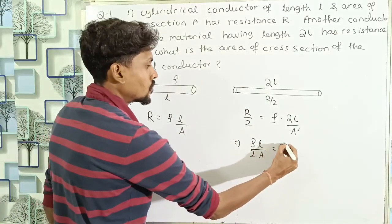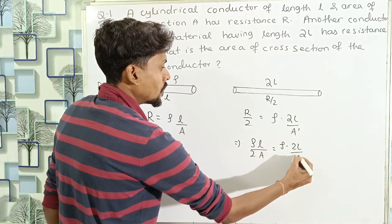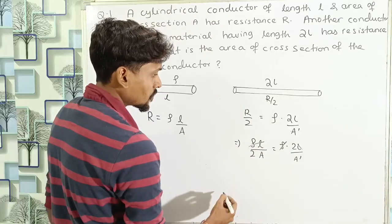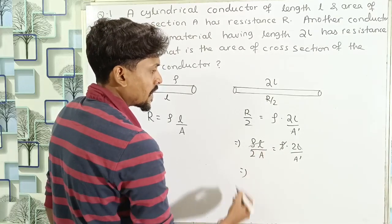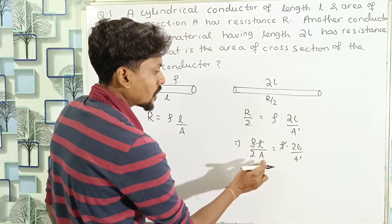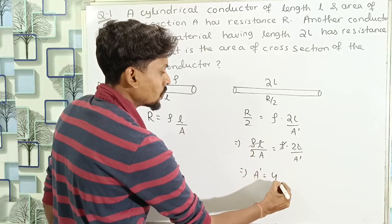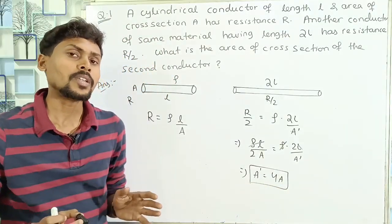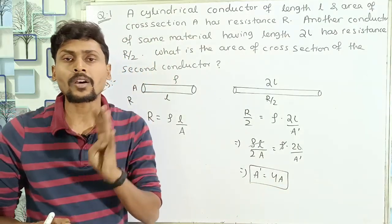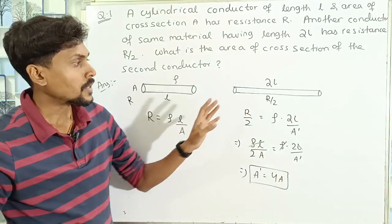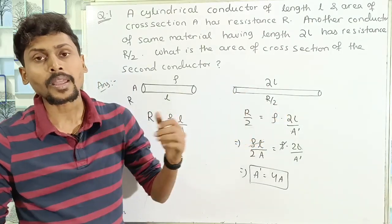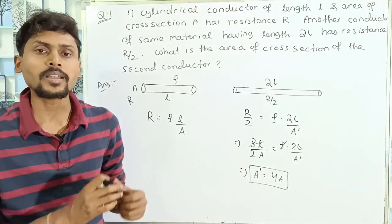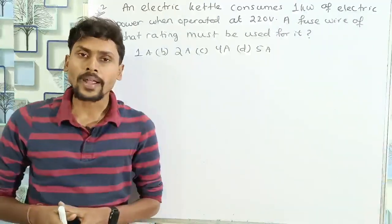Setting up the equation: ρL divided by 2A equals ρ into 2L divided by A dash. The ρ and L cancel on both sides, giving A dash equals 2A times 2, which equals 4A. So the area of cross section of the second conductor is 4 times that of the first conductor. That is why the resistance becomes half.